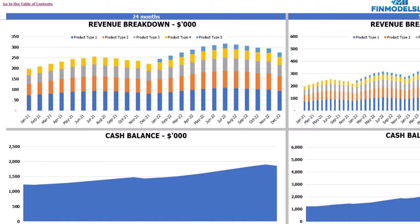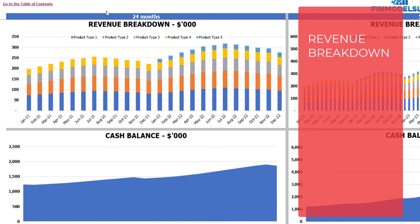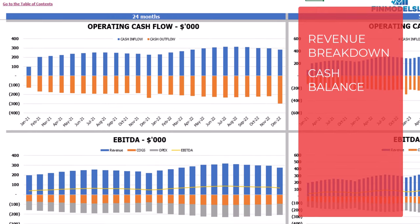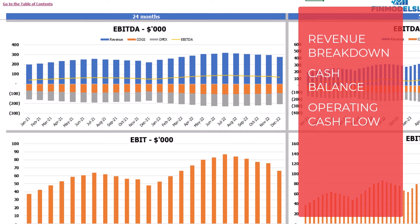On the financial charts tab you may see the main financial outputs in graphical form. On the left side you may see charts for 24 months and on the right side charts for 5 years or 60 months. The top couple of charts show revenue breakdown by product types. The next charts show cash balance for 2 years and 5 years. Then operating cash flow broken down by cash inflow and outflow, followed by EBDA breakdown — revenue, COGS and OPEX — with a yellow line showing the resulting EBDA value by month, and finally EBIT value by month.